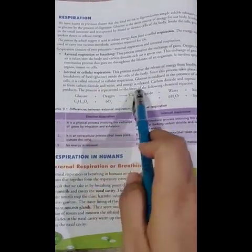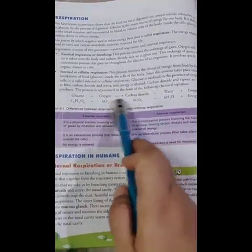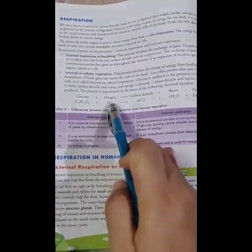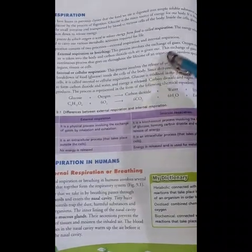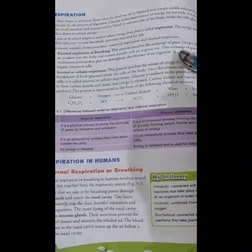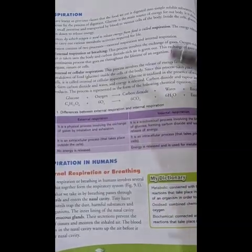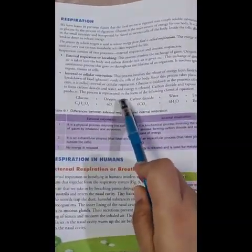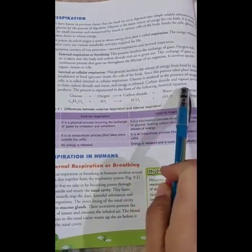So glucose is oxidized in the presence of oxygen to release carbon dioxide, water, and energy. Here we can see the reaction: glucose reacts with oxygen and releases carbon dioxide, water, and energy. This energy is used by our body to perform various metabolic activities. Carbon dioxide is exhaled and given out from the body, and the water is utilized in the process. Carbon dioxide and water vapors are by-products, and the process is represented in the form of the following equation.